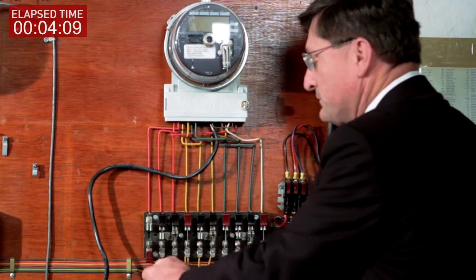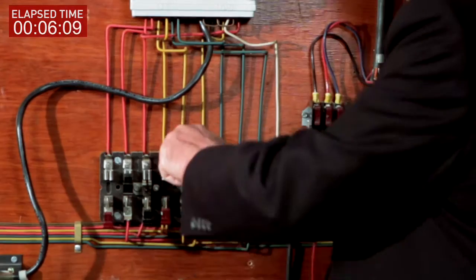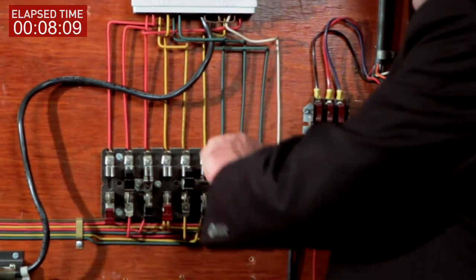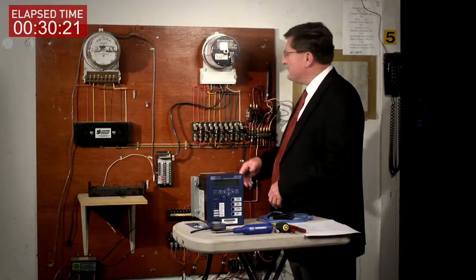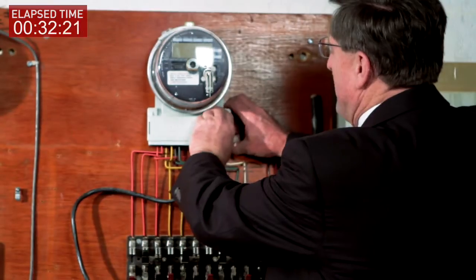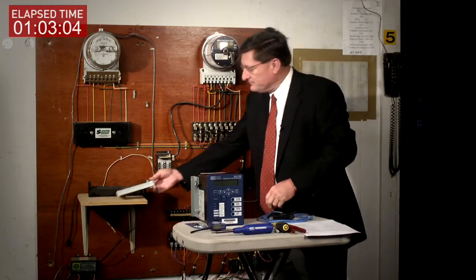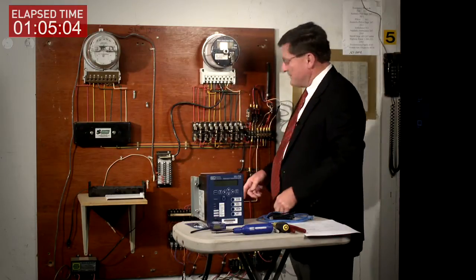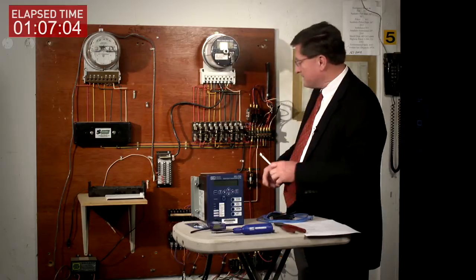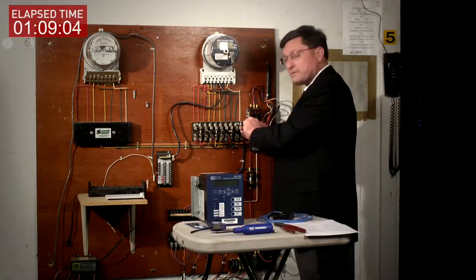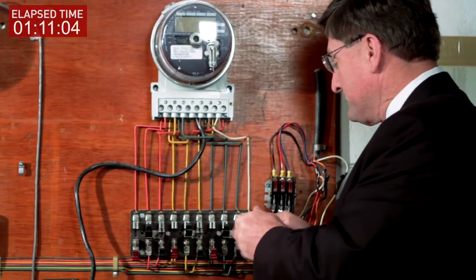We begin by removing the test switch cover, opening our test switches here to isolate the meter from your actual service. Next we'll remove our cover over our secondary connections. Now we're going to take our nut driver and remove our connections on the top of the meter test switch.